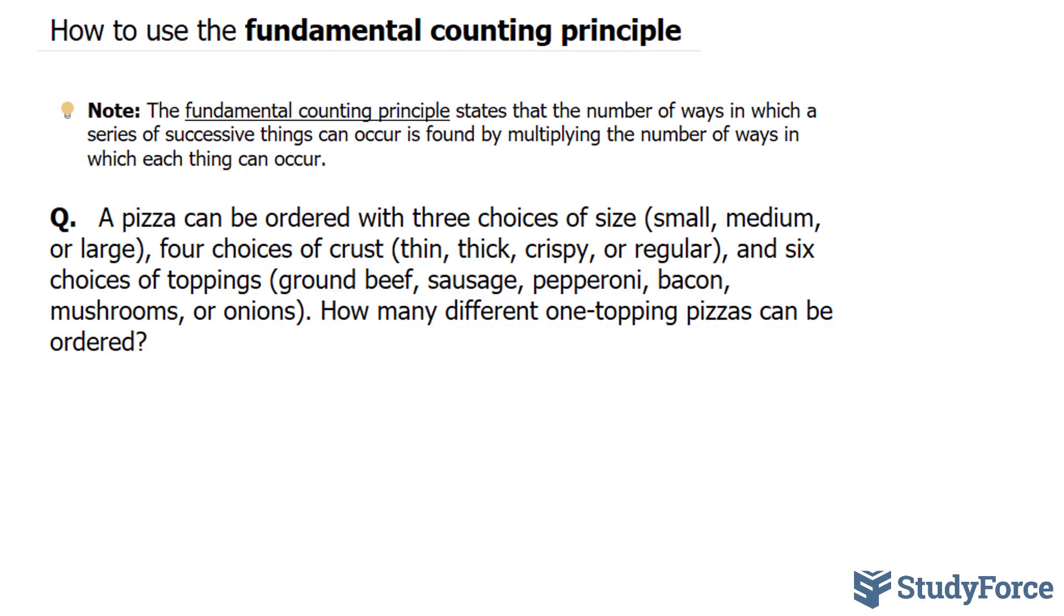In this lesson, I'll introduce you to the Fundamental Counting Principle. The Fundamental Counting Principle states that the number of ways in which a series of successive things can occur is found by multiplying the number of ways in which each thing can occur. Now, if that's confusing to you, let's take a look at three different examples.